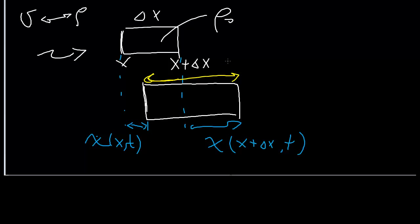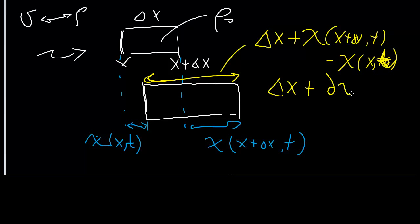So the size of this packet is going to be given by the original length plus the difference between the two displacements here at t minus x and t there. Excuse me for the mess. Now, as we put delta x to be small, since we're considering a very small air packet, we can once again use linear approximation or Taylor series expansion, as you will, to bring out this partial derivative.